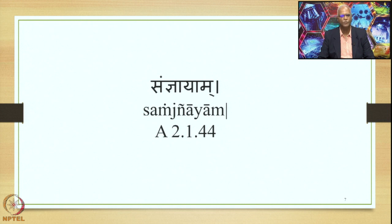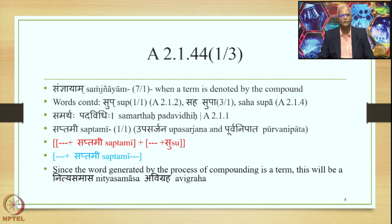Let us concentrate on Sutra 2144, Saudhnyayam. There is only one Pada in this Sutra, Saudhnyayam, which is in 7/1. Saudhnyayam means a technical term — when a term is denoted by the compound. Words continued are Sup from 2.1.2 and Sahasupa from 2.1.4. Samarthap Padavidhihi is present. The word Saptami is also continued, appearing in 1/1, Prathama Vibhakti. Therefore, Prathama Nirdishtam Samasa Upasarjanam applies, so any word in the Saptami Vibhakti will be termed as Upasarjana.